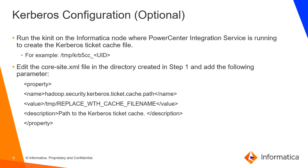Once the ticket cache file has been generated, you need to specify its location under the hadoop.security.kerberos.ticket.cache.path property within the core-site.xml file. The integration service will use the class path variable to find the site XMLs, read the values of those properties, and then access the Kerberos cluster.